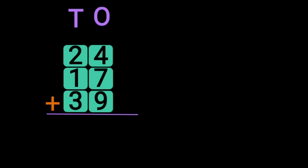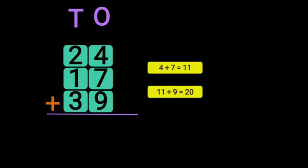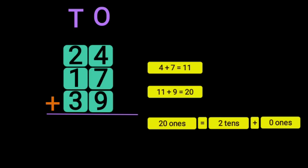Let us do another example. We have 24 plus 17 plus 39. Write down the place values 1's and 10's. Add the digits in the 1's place: 4 plus 7 gives you 11, and 11 plus 9 gives you 20. So we have 20 ones. 20 ones can be regrouped as 2 tens plus 0 ones. Retain the 0 in the 1's place and take the 2 tens as a carry over to the 10's place.